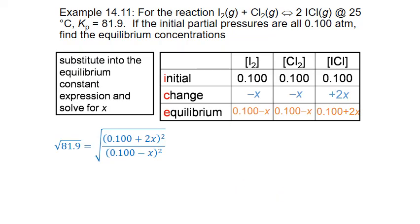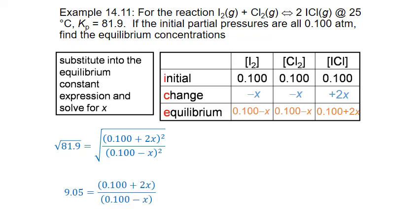Because both the numerator and denominator are squared, we can take the square root of both sides. We can only do this because both terms are squared; if only one were squared, we could not use this shortcut. Taking the square root of 81.9 gives 9.05, leaving the simpler ratio of 0.100 plus 2X divided by 0.100 minus X.